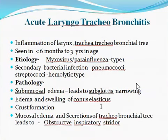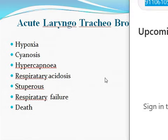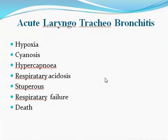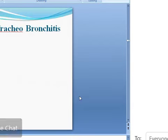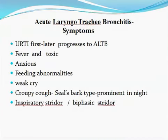It first starts with obstructive inspiratory stridor. In these cases, the patient will slowly go into hypoxia and later into cyanosis, and there is hypercapnia which leads to respiratory acidosis. The patient slowly goes into a stuporous condition and sometimes ends up with respiratory failure. It starts from a respiratory tract infection, and slowly this infection progresses.